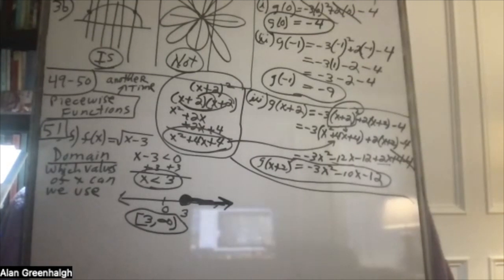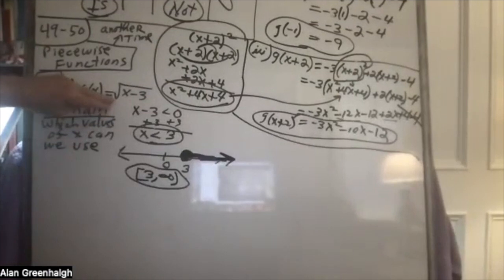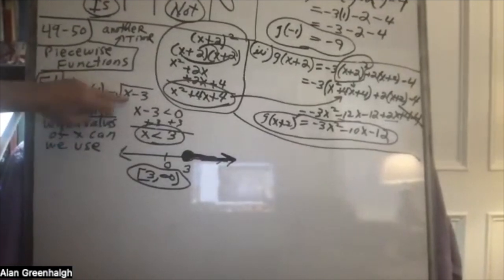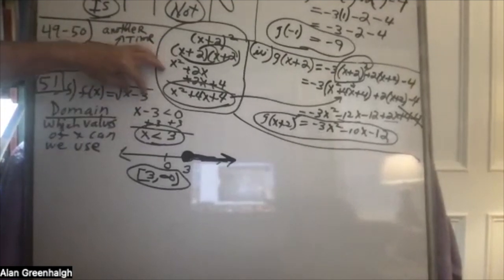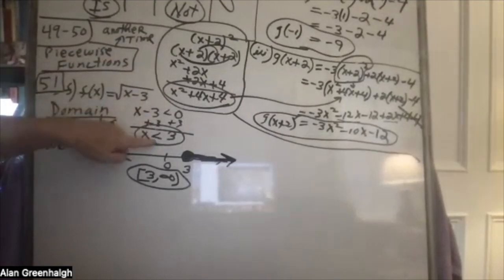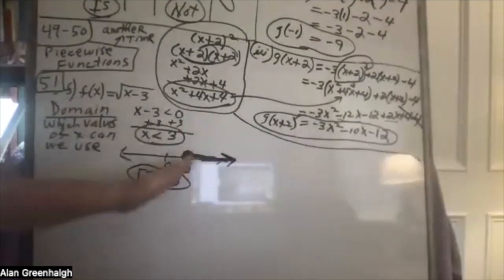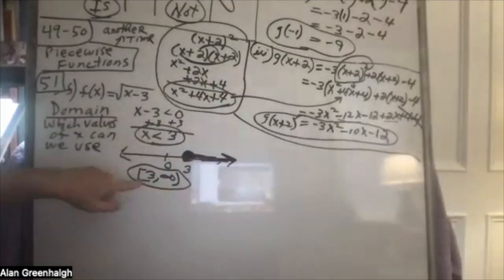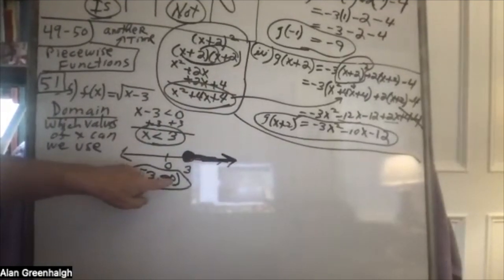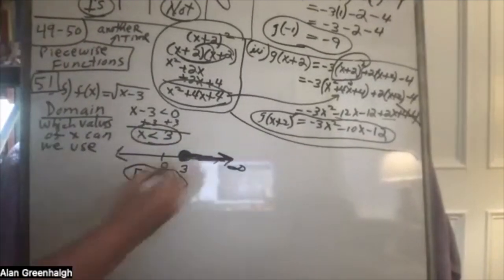There are only two types of functions where domain restrictions arise. One is when you're taking the square root — the inside cannot be less than zero. Here, x must be greater than or equal to three, and the answer in interval notation is from three all the way out to infinity.